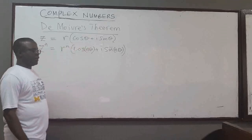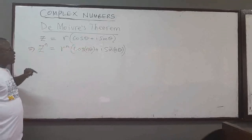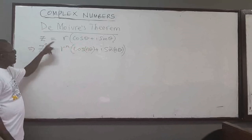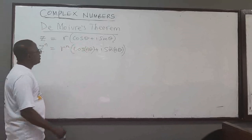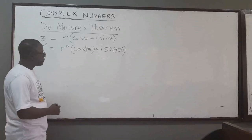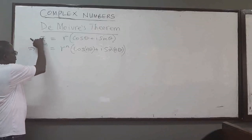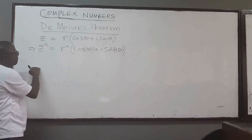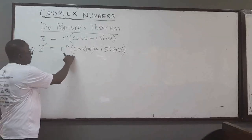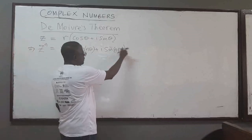In the previous lecture, we ended up with De Moivre's theorem, which says that given a complex number z equal to R times (cos θ + i·sin θ), if you raise z to the power n, where n is an integer, then you can write this as R^n times (cos(nθ) + i·sin(nθ)).